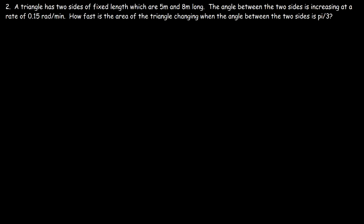Now let's work on another problem. A triangle has two sides of fixed length which are 5 meters and 8 meters long. The angle between the two sides is increasing at a rate of 0.15 radians per minute. How fast is the area of the triangle changing when the angle between the two sides is pi over 3?